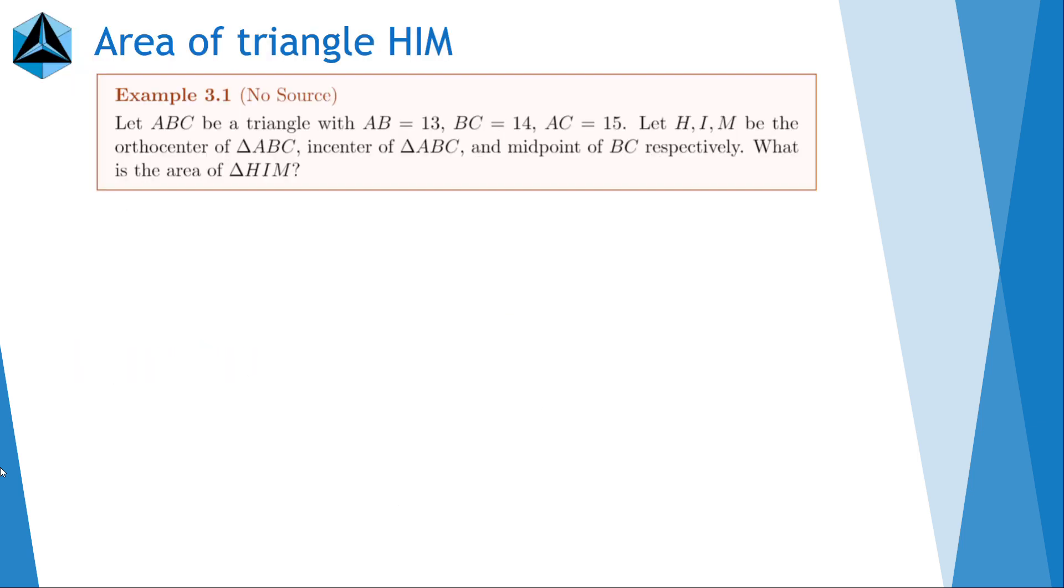Okay, so now it's time for some examples. So in this example, you're given the side lengths of a triangle, 13, 14, 15. And you're told to find the area formed by the triangle HIM, where H is the orthocenter, I is the in-center, and M is the midpoint of BC. So as usual, we'll be setting A as 0 comma a and B as b comma 0, C as c comma 0.